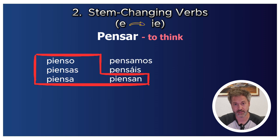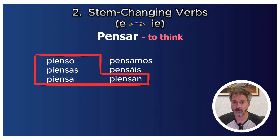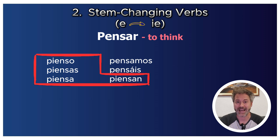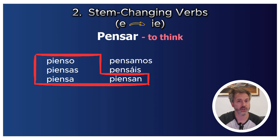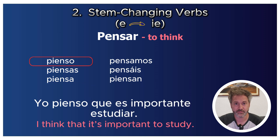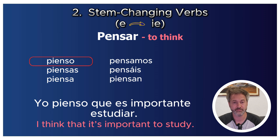Using pensar as our example: instead of 'yo penso,' the E changes to IE giving 'yo pienso.' The full conjugation: tú piensas, él/ella/usted piensa, nosotros pensamos, vosotros pensáis, ellos/ellas/ustedes piensan. The change skips nosotros and vosotros, which is why it looks like a boot. For example: 'Yo pienso que es importante estudiar' — I think that it's important to study.